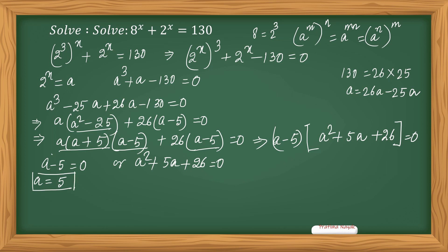For the second equation, using the quadratic formula, a equals minus 5 plus or minus the square root of 25 minus 4 times 26, which is 25 minus 104. I am not getting a real root here, so this will be cancelled. I am only taking a equals 5.